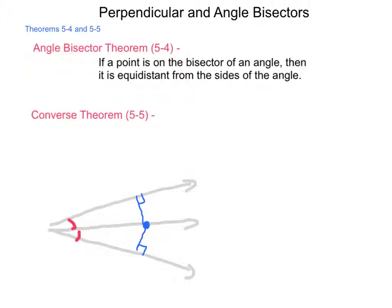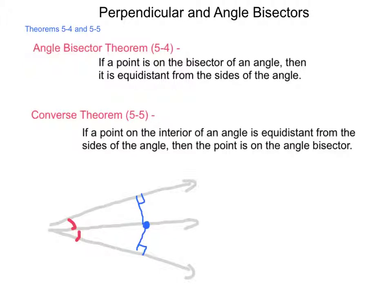Next, the converse of theorem 5-4 is theorem 5-5, which states: if a point on the interior of an angle is equidistant from the sides of the angle, then the point is on the angle bisector. So, if I know that some random point sitting out here is equidistant from the two sides, then it has to be on the angle bisector itself.